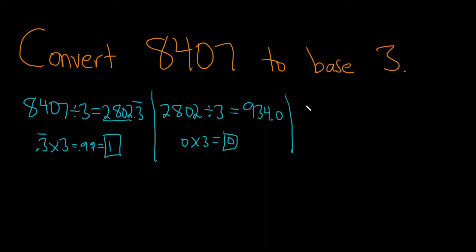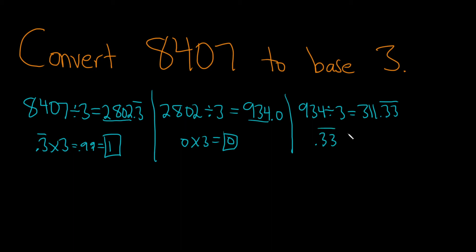Then we do it again. Take 934 and divide it by 3. So 934 divided by 3 — I got 311.333 repeating. Same thing: you do 0.33 times 3, that gives you 1. So the remainder is 1.